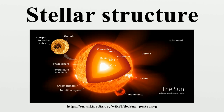Giants are also fully convective. The simplest commonly used model of stellar structure is the spherically symmetric quasi-static model, which assumes that a star is in a steady state and that it is spherically symmetric. It contains four basic first-order differential equations: two represent how matter and pressure vary with radius, and two represent how temperature and luminosity vary with radius.